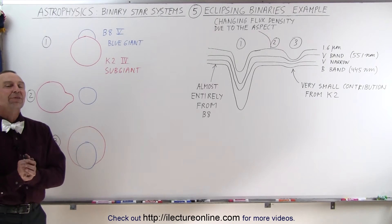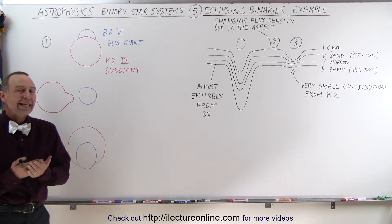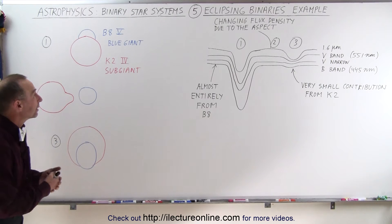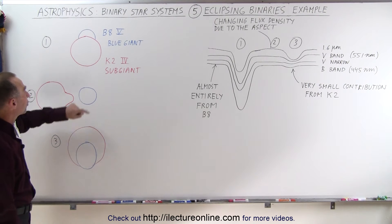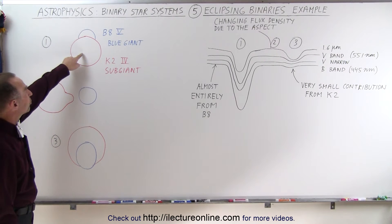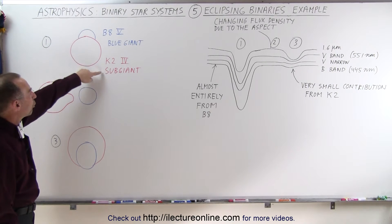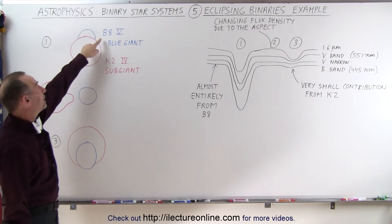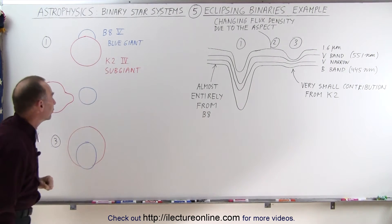Welcome to ElectronLine. Now let's take a look at an example of an eclipsing binary star system. In this particular star system there are two stars: a K2-4 subgiant and a B85 blue giant.